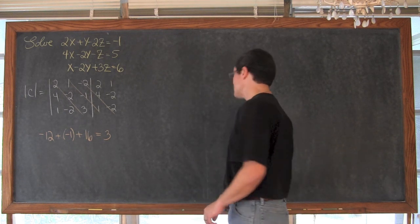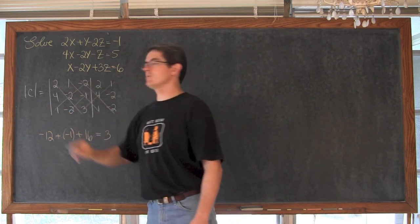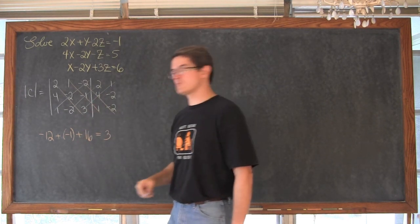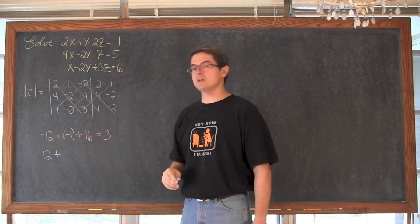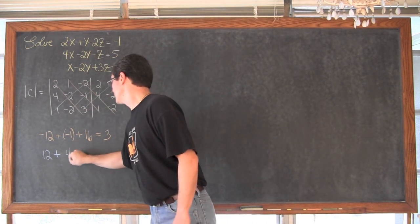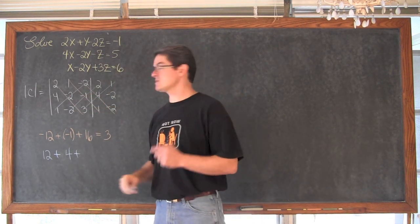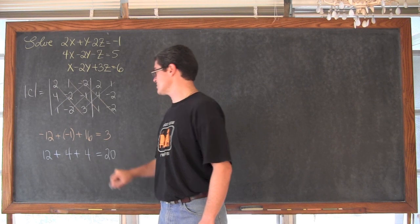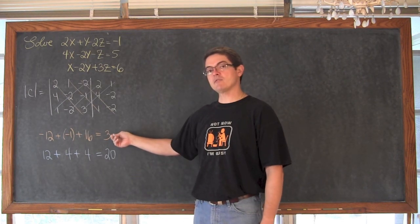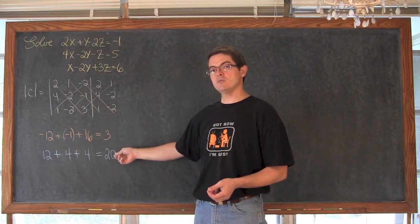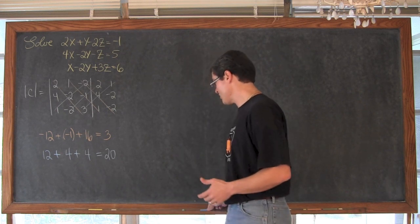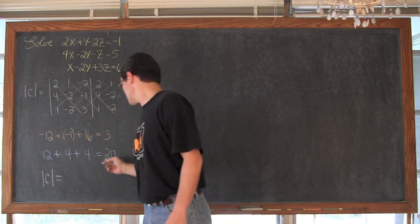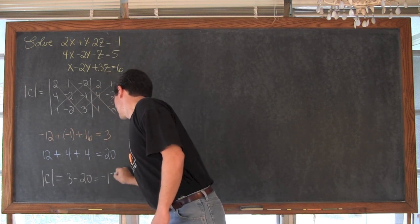Now we multiply through the diagonals going from the upper right-hand corner down through all the rows and add those as well. We have 1 times 4 times 3 is 12, plus 2 times negative 1 times negative 2 is positive 4, plus negative 2 times negative 2 times negative 1 giving negative 4; so the sum of the second diagonals is 12 plus 4 minus 4 equals... The full determinant of C is equal to 3 minus 20, giving us negative 17.